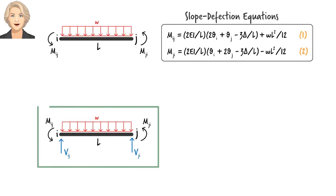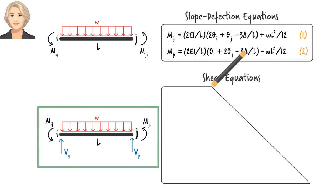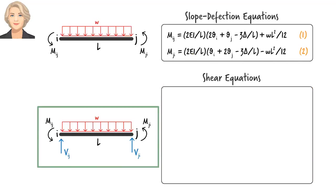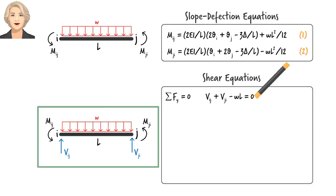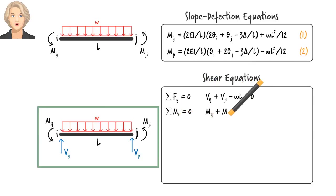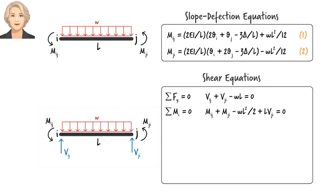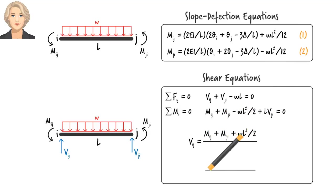For this free-body diagram, we can write: sum of forces in the y-direction must be zero, and sum of moments about end i must be zero. Solving these equations for V_ij and V_ji, we get equations 3 and 4.